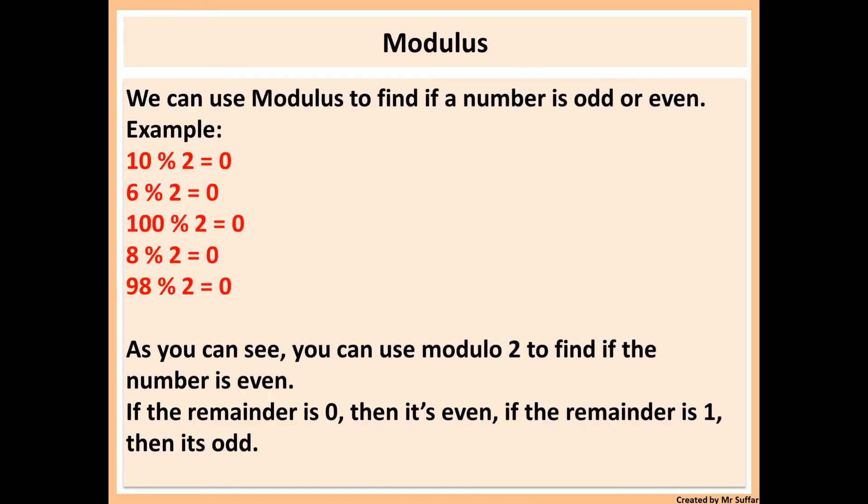Now finally we're going to look at modulus, which is an arithmetic operator to find the remainder of something, and to find if the number is odd or even. If we look here, we can see that 10 modulus 2 will give us a remainder of 0. 6 modulus 2 will give us a remainder of 0. 100 modulus 2 will give us a remainder of 0. 8 modulus 2, remainder of 0 and so on.